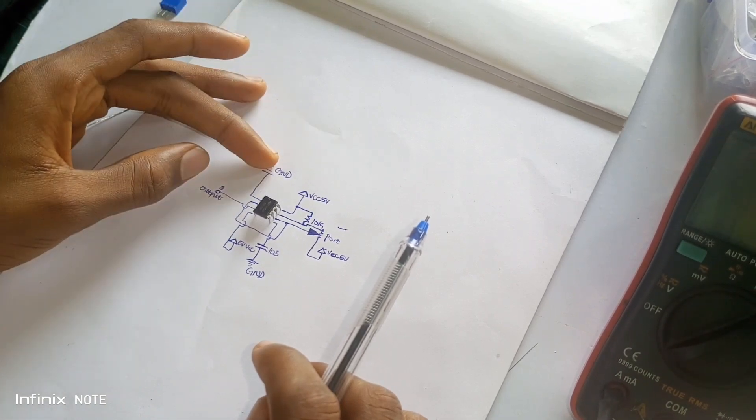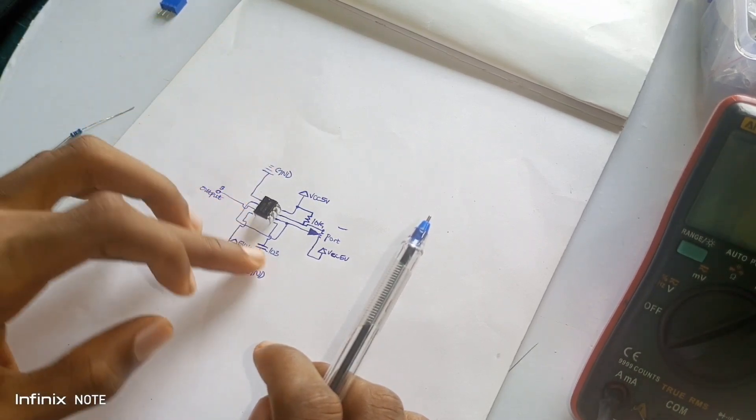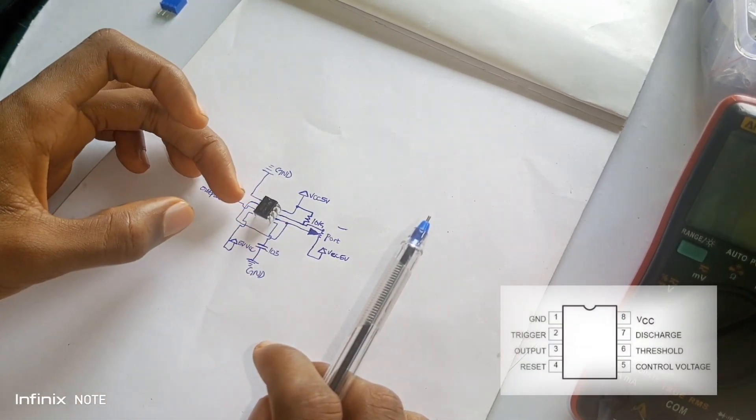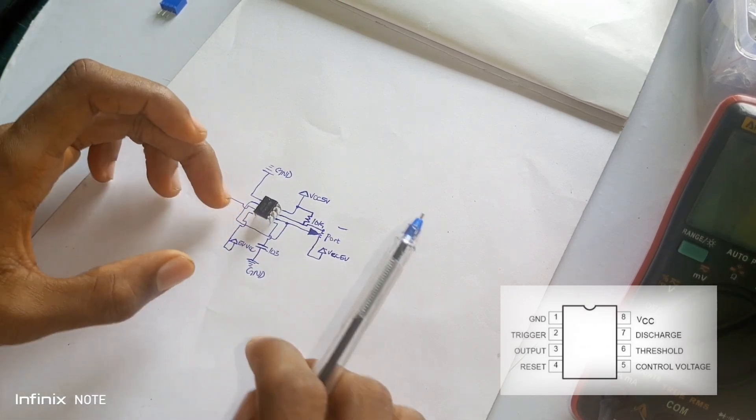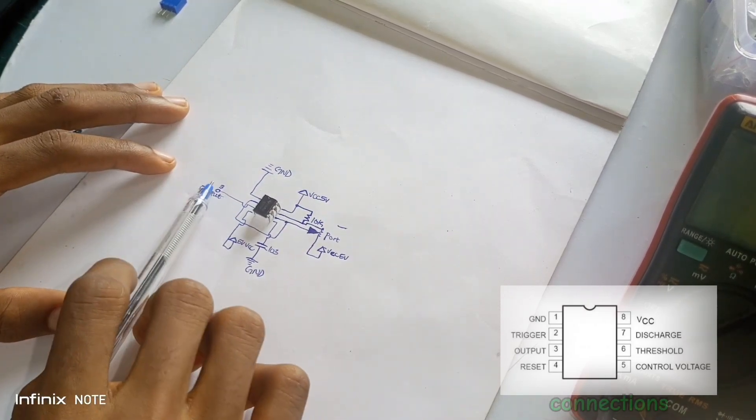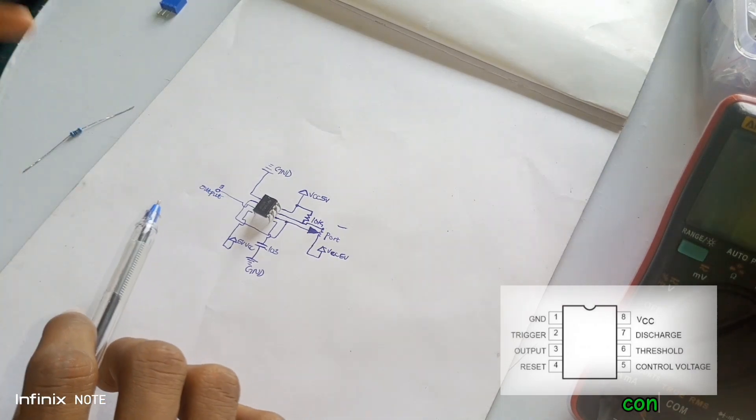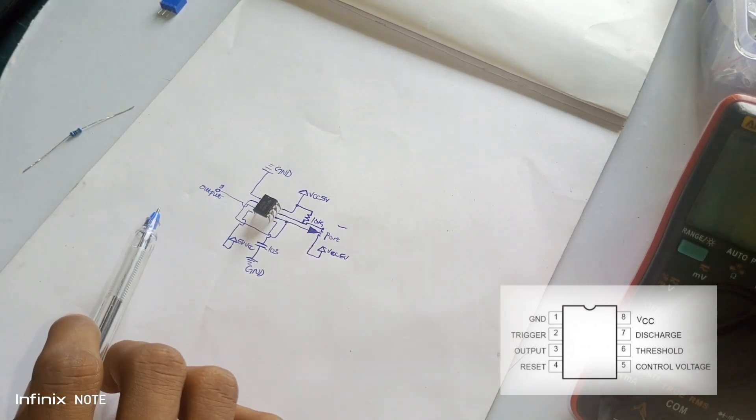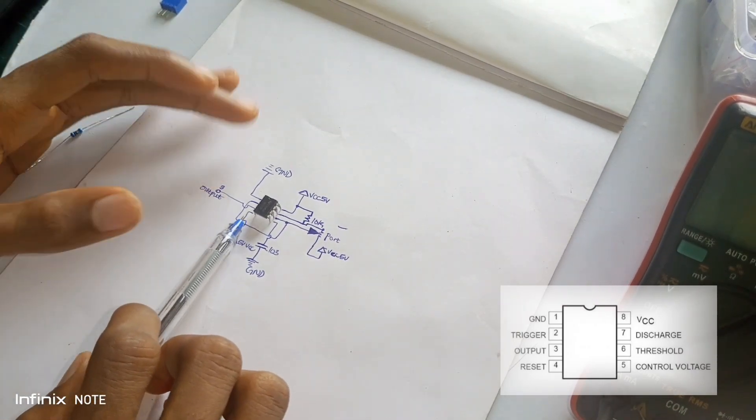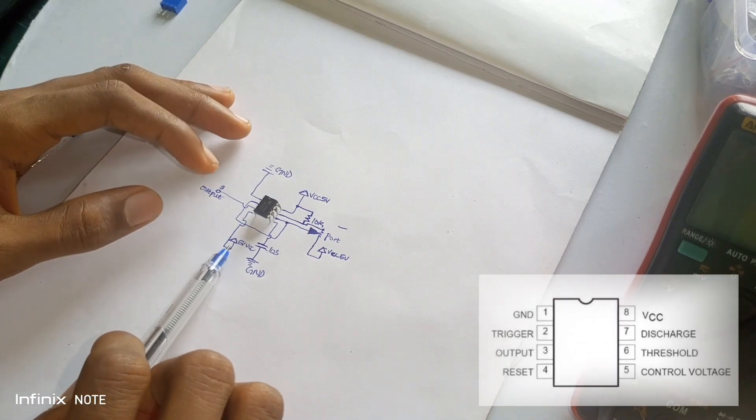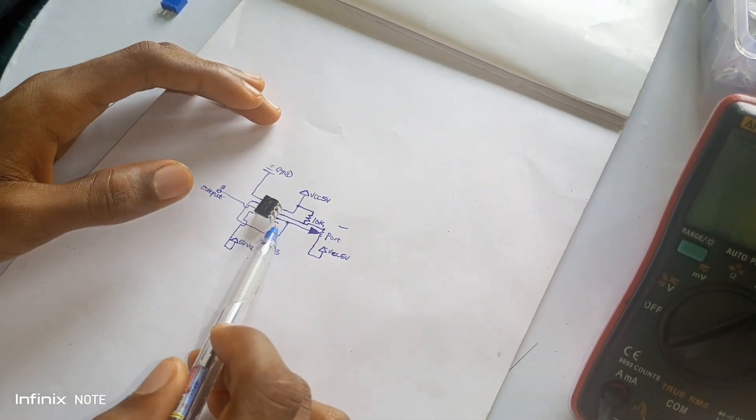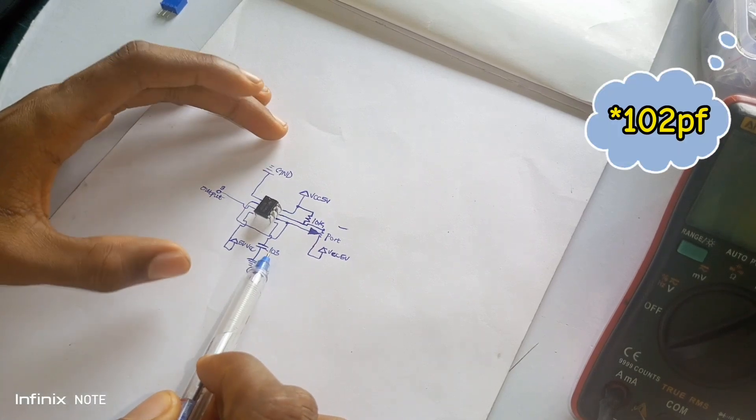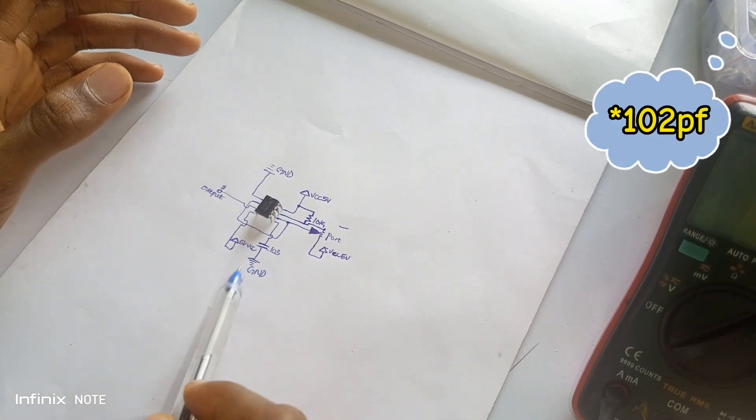The first pin is connected to ground. The second pin is connected to pin 6. The third pin is the output of the 555 timer. This is the output which is producing the frequency. Pin 4 is connected to VCC. Pin 5 is connected to this 130 pF capacitor, then to ground.